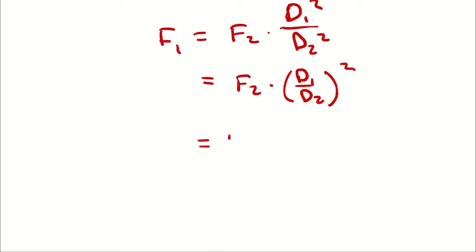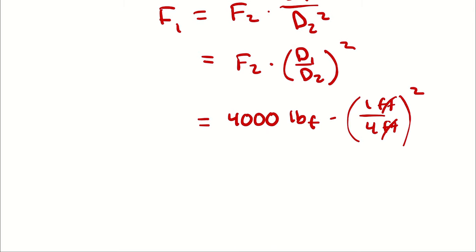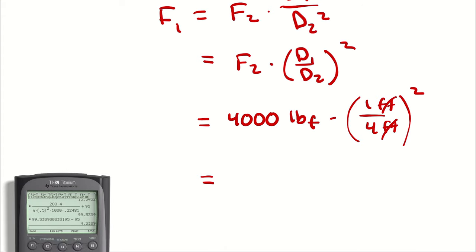F2 is 4,000 pounds of force times 1 foot over 4 foot. We cancel. Squared. 1 quarter squared is going to be 1 16th. 1 16th of 4,000 is 250. I'll confirm that with the calculator.